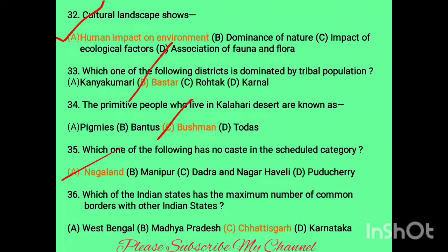Question thirty-six: which Indian state has the maximum number of common borders with other Indian states? The answer is Chhattisgarh. West Bengal, Madhya Pradesh, and Karnataka each share borders with five states, but only Chhattisgarh has six neighbouring states.